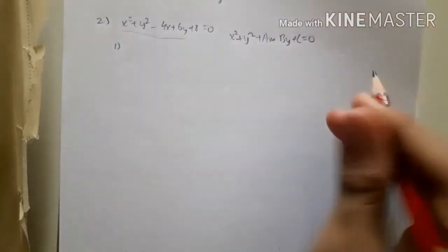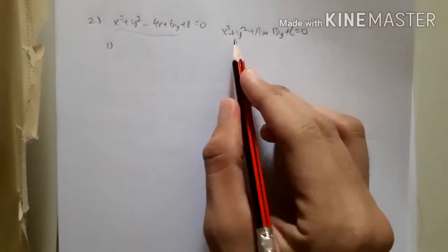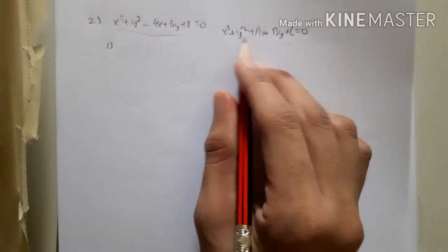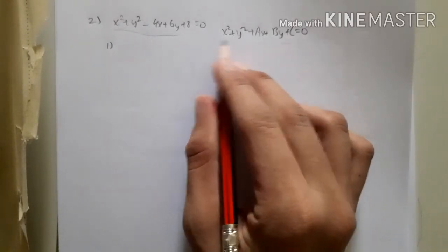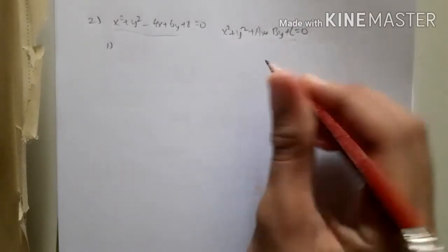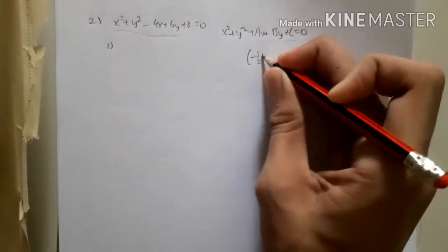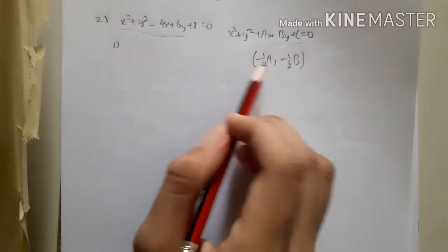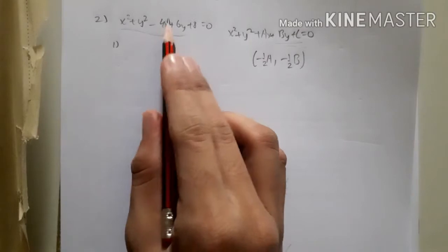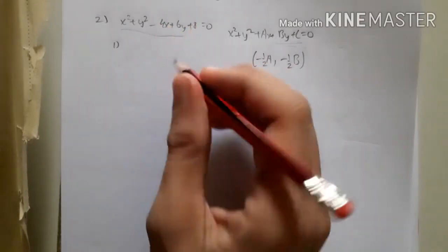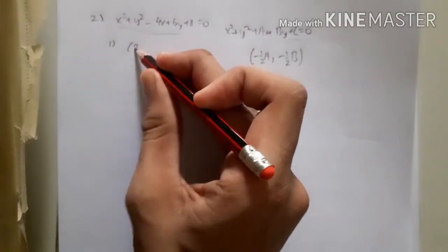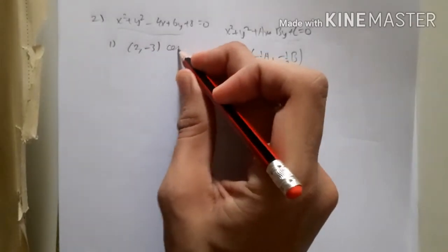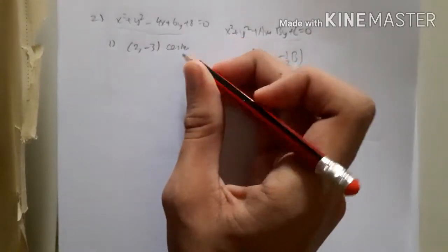You should be familiar with the general circle equation. There are a few forms, but in this form, to find the center you just use a simple formula: minus half of negative four and minus half of six, which gives (2, -3). So this is the center of the circle.